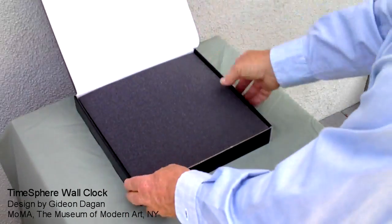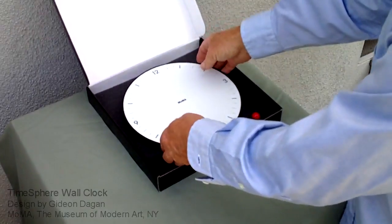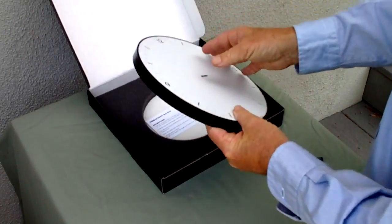It's easy to set up your new TimeSphere clock. Insert one new AA alkaline battery into the battery compartment.